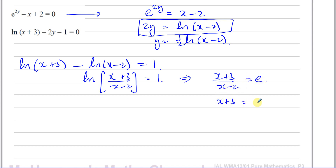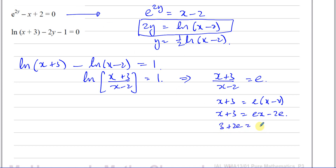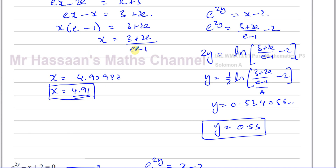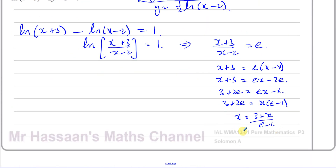So X plus 3 equals E times (X minus 2), giving EX minus 2E. Bringing the X terms together: 3 plus 2E equals EX minus X, so 3 plus 2E equals X times (E minus 1). Therefore X equals (3 plus 2E) over (E minus 1) — exactly the same answer as before. If the terms had been on the other side it would be minus 3 minus 2E over 1 minus E, which is the same thing. So X equals 4.91 to two decimal places, exactly as we found before.